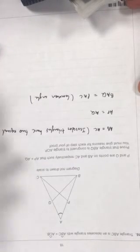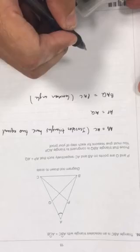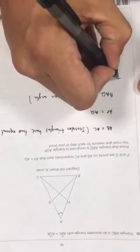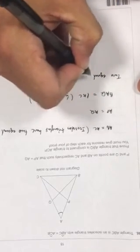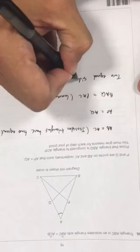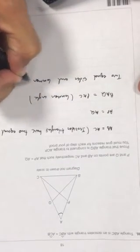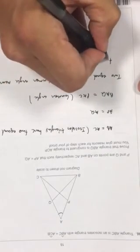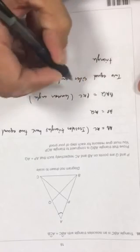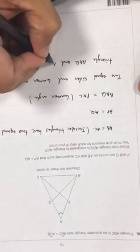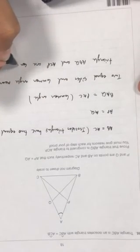So by the side angle side rule, that means that those two triangles are congruent. So two equal sides and common angle means triangle ABQ and ACP are congruent.